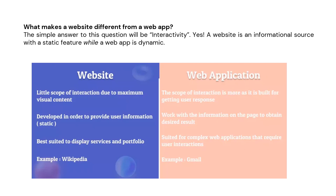A web app works with the information on the page to obtain the desired result. A website is suited to display services and portfolio, while a web app is suited for complex web applications that require user interactions. For example, Wikipedia is a website and Gmail is a web application.